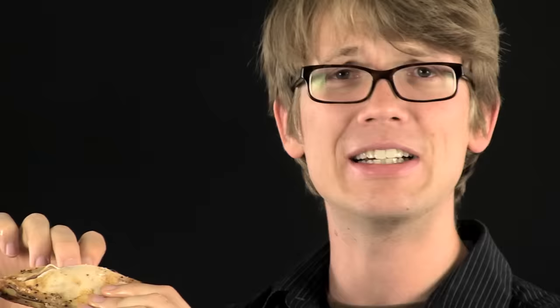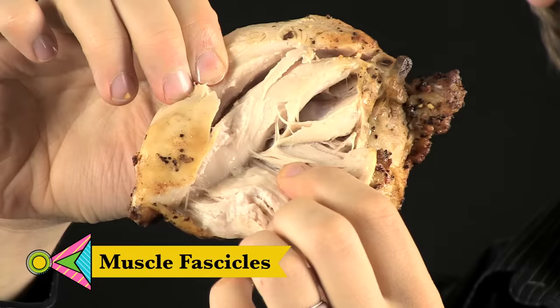This chicken breast is, or was, the pectoralis major muscle of a chicken. It connected the bird's sternum, or breastbone, to the humerus in its wing, and sometimes I feel like chickens have bigger pecs than I do. This is crazy. When you peel this muscle apart, you see that it's really made up of layers of thin strings. These are muscle fascicles, and each fascicle is made up of lots and lots of smaller strands. These, we can't see. They're called muscle fibers, and these are the actual muscle cells.